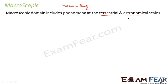So the macroscopic domain includes phenomena at the terrestrial and astronomical scales. When I say terrestrial, I talk about things which we see around us. For example, human beings, animals, trees, buildings, and anything. Almost everything that is visible to us which we can see with our naked eye around us. They all fall under the terrestrial scale.